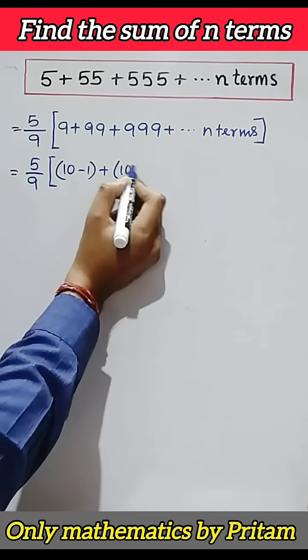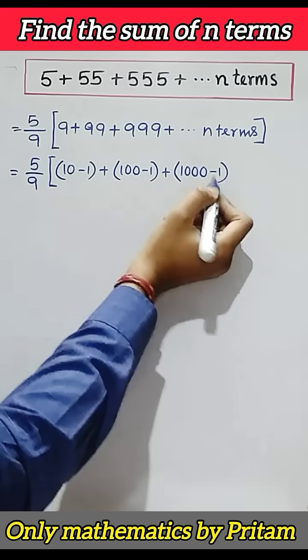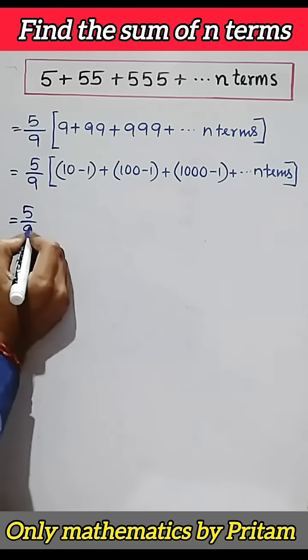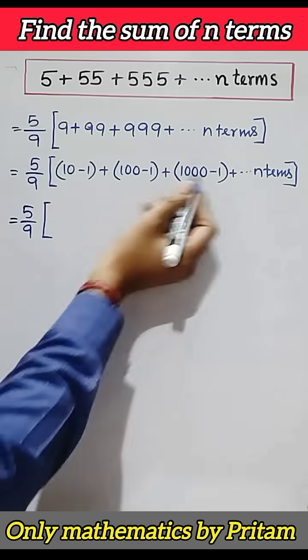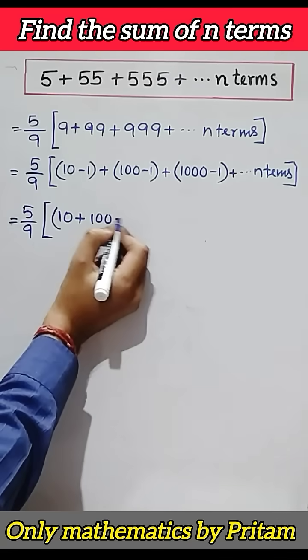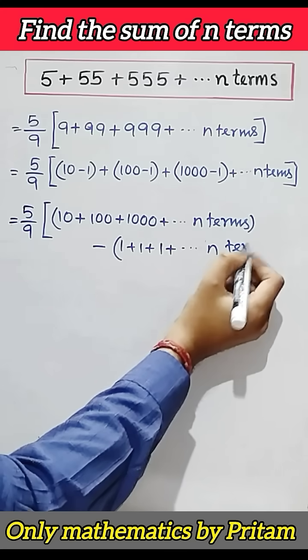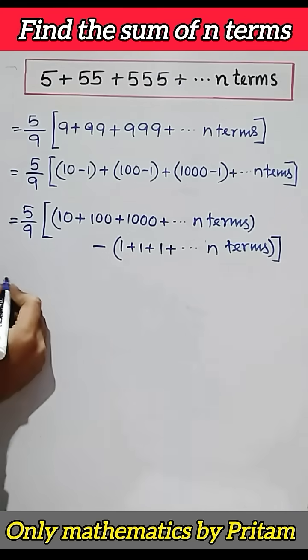99 can be 100 minus 1, and this one can be 1000 minus 1. Now 5 by 9. We write 10, hundred, thousand in one bracket, and this one can be another bracket separately. Next, 5 by 9.